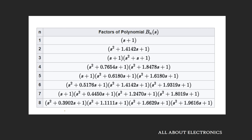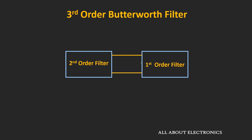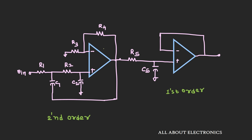Using these filter polynomials, we can design any-order Butterworth low pass filters. For example, to design a third order Butterworth low pass filter, the transfer function factors as (s + 1)·(s² + s + 1). This requires cascading a second order Sallen-Key Butterworth low pass filter with a first order RC low pass filter, using the polynomial (s + 1)·(s² + s + 1).